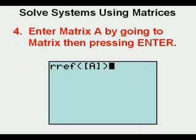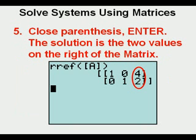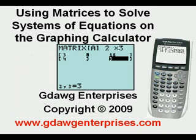Fourth, enter Matrix A by going to the matrix menu, then pressing Enter. Fifth, close the parentheses, then press Enter. Pick out the two numbers on the right. They will be your solution.